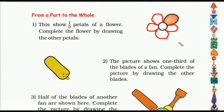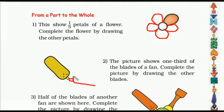Now question two: the picture shows one third of the blades of a fan. That means here one part out of three parts. Complete the picture by drawing the other blades. We have to draw the remaining parts — two remaining parts are left. So we will draw here two remaining parts. We have completed the picture by drawing the other two blades.